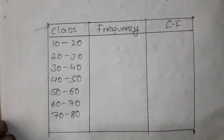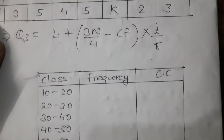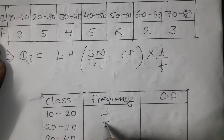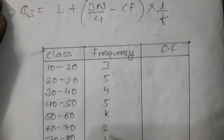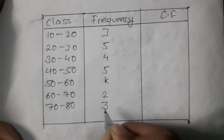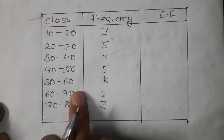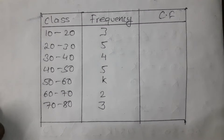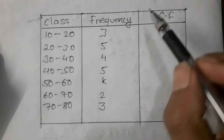We fill up the class column with respective frequencies. The frequencies are: 3, 5, 4, 5, k, 2, 3. We fill up the frequency column with these values, where k is the missing frequency we need to find.